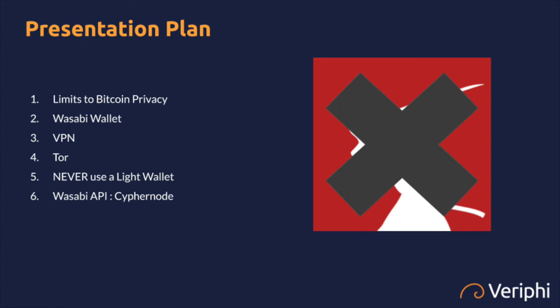So the presentation plan: we're not going to talk about Wasabi wallet to begin, because I discourage users from using it. I believe it's an incomplete solution and the team behind it has some bad — let's say, not a lot of integrity when it comes to operating their business. But we're going to talk about limits to Bitcoin privacy, what's the issue at hand, then how Wasabi wallet works and how it resolves it. I'm going to show how it works by manipulating the wallet a little bit. I'm not going to participate in a CoinJoin — I'll explain later what that means — because it would take too long and it has a cost.